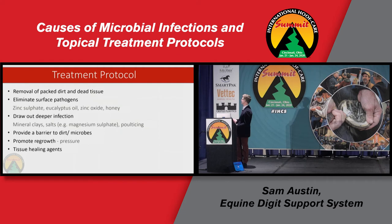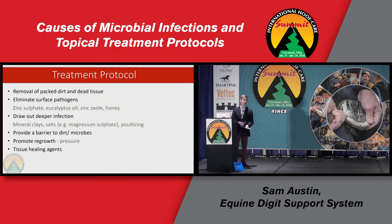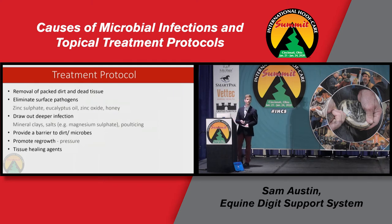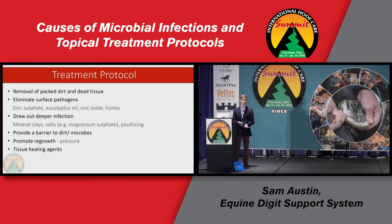Tissue healing agents include honey, zinc oxide — which is a tissue healing agent — and even aloe vera, although aloe vera has to be quite concentrated, because you can end up introducing too much moisture into the situation if you're not careful.